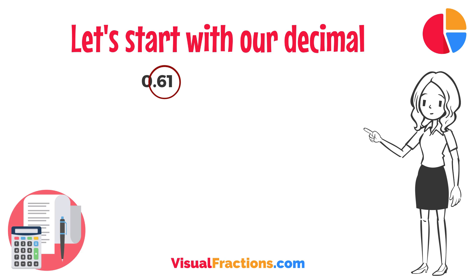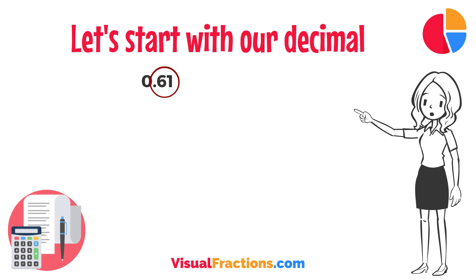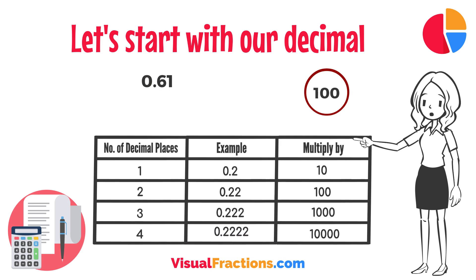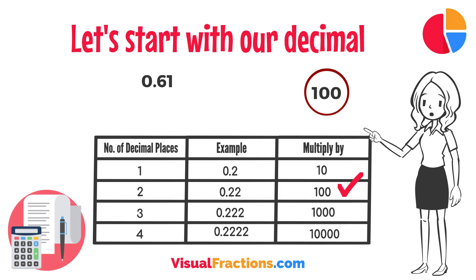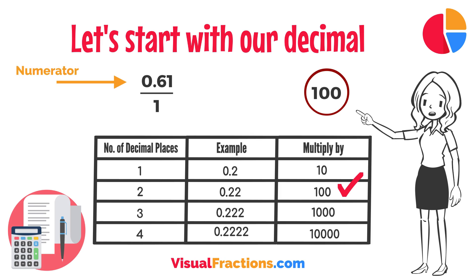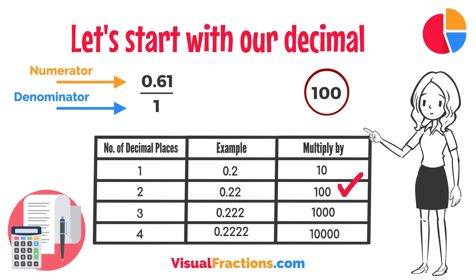Notice there are two digits to the right of the decimal. This places it in the hundredths position. To convert this decimal into a fraction, you initially put it over 1, essentially treating the decimal as the numerator in a fraction where the denominator is 1.